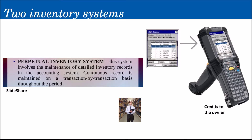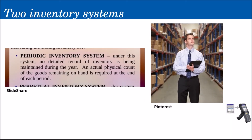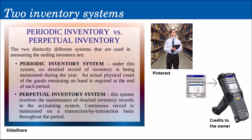Simply put: under the periodic inventory system, there is no maintenance of detailed records. Under the perpetual inventory system, inventory records are updated with every purchase and sale.